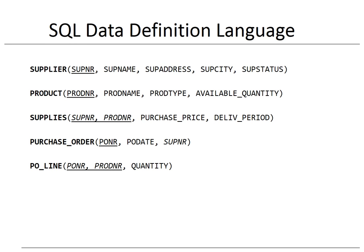Here you can see the corresponding relational tables for our ER model. The supplier and product tables correspond to the supplier and product entity types. The 'supplies' table implements the many-to-many relationship type between supplier and product. Its primary key is a combination of two foreign keys: supplier number and product number. It also includes both the purchase price and delivery period. The purchase order table corresponds to the purchase order entity type and has a foreign key supplier number referring to the supplier table. The purchase order line table implements the many-to-many relationship between purchase order and product, with a composite primary key of purchase order number and product number, and includes the quantity attribute.